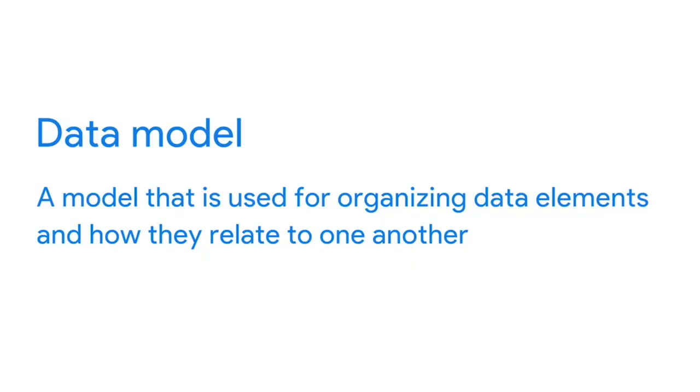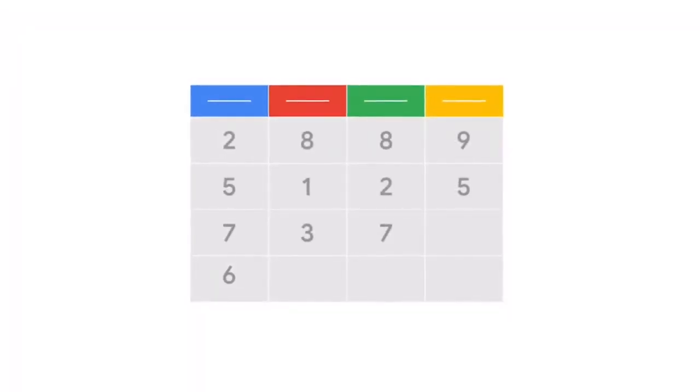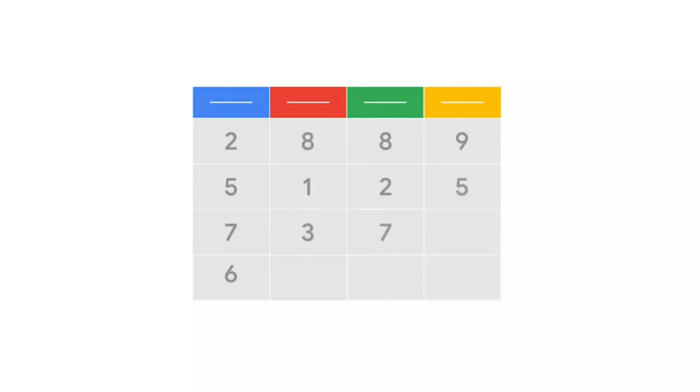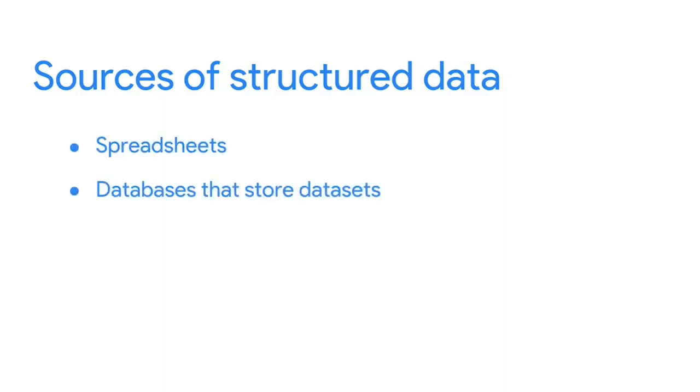Data elements are pieces of information, such as people's names, account numbers, and addresses. Data models help to keep data consistent and provide a map of how data is organized. This makes it easier for analysts and other stakeholders to make sense of their data and use it for business purposes. In addition to working well within data models, structured data is also useful for databases. This makes it easy for analysts to enter, query, and analyze the data whenever they need to. This also helps make data visualization pretty easy, because structured data can be applied directly to charts, graphs, heat maps, dashboards, and most other visual representations of data. Spreadsheets and databases that store datasets are widely used sources of structured data.